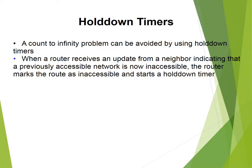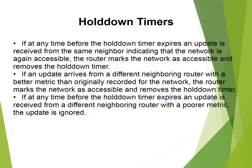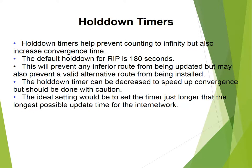When the router receives an update from a neighbor indicating that a previously accessible network is now inaccessible, the router marks the route as inaccessible and starts a hold-down timer. If before the hold-down timer expires an update is received from the same neighbor indicating the network is again accessible, the router marks it as accessible and removes the hold-down timer. If an update arrives from a different neighboring router with a better metric than originally recorded, the router also marks the network as accessible and removes the timer. If an update from a different neighbor arrives with a poorer metric, the update is ignored.